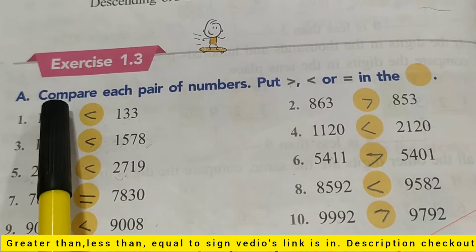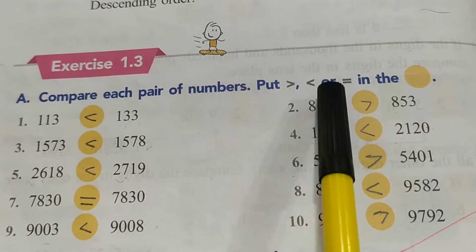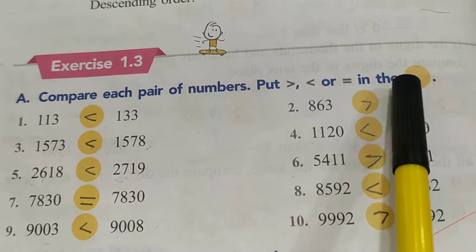Part A is compare each pair of numbers, put greater than, less than or equal to sign in circle.